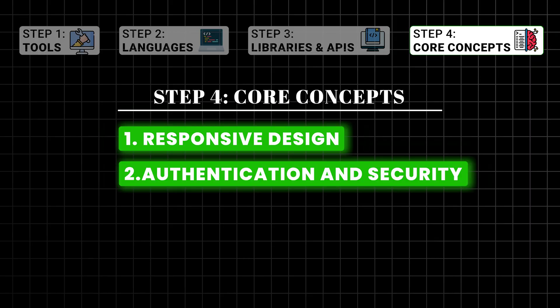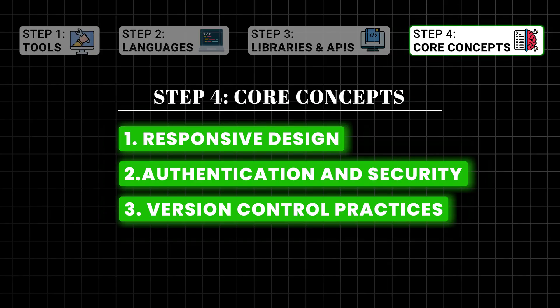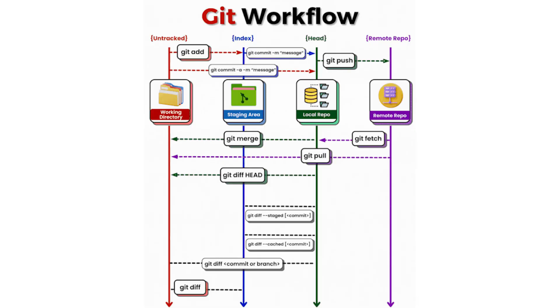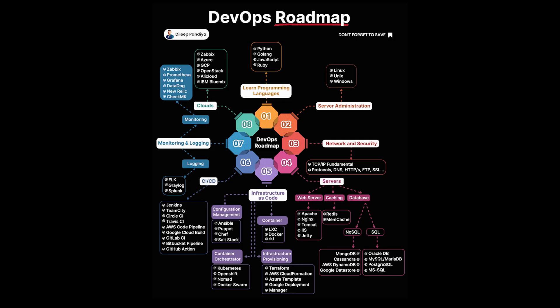Responsive Design: build layouts that adapt to different screen sizes using concepts like media queries. Authentication and Security: learn about user authentication and authorization using JSON Web Tokens (JWT), and secure your application with HTTPS and basic encryption techniques. Version Control Practices: understand branching strategies, pull requests, and how to collaborate with colleagues on Git. Performance Optimization: learn techniques to reduce load times, optimize assets, and improve performance metrics like rendering time. DevOps: understand what happens after you push your code to GitHub — how that code actually converts to a full-fledged application with UI, backend, and all libraries working together synchronously.